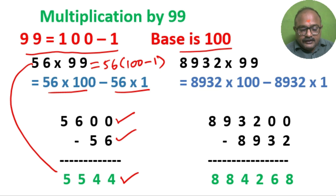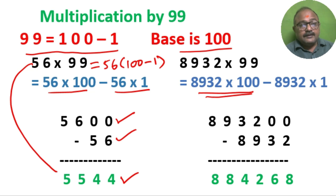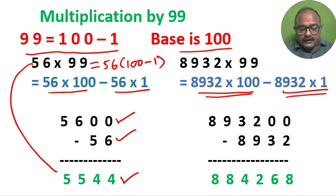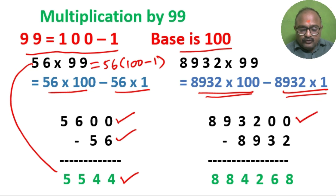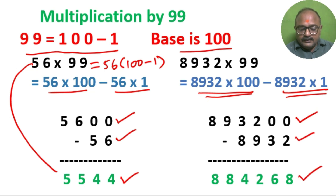8932 into 99: we can write this as 8932 into 100 minus 8932 into 1. So 8932 into 100 is 893200, and 8932 into 1 is 8932. If you subtract, we get the required answer: 884268.